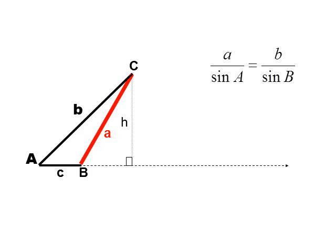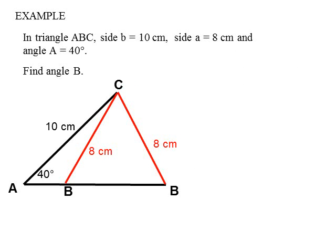Both have the same side b, the same side length a, the same angle A, but different angle B's. Here's an example: in triangle ABC, side b is 10 centimeters, side a is 8 centimeters, angle A is 40. Find angle B. Well, it could be this angle down here, the acute angle, or it could be this obtuse angle in here.